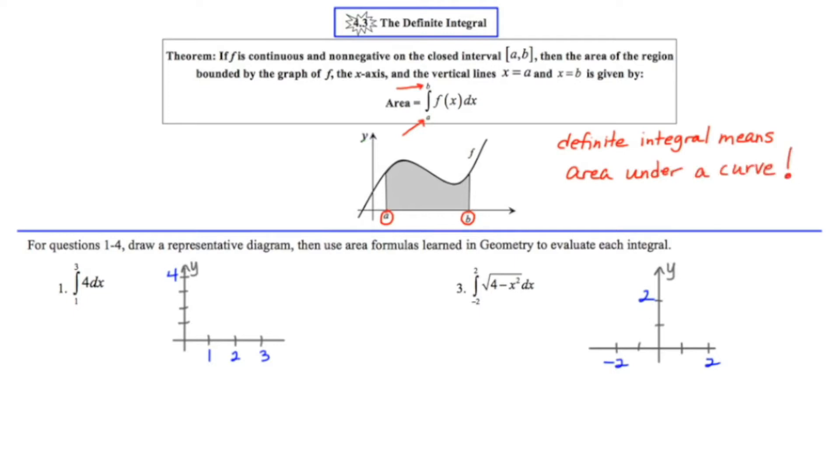Let's take a look at a specific question. For questions one through four, draw a representative diagram, then use the formulas learned in geometry to evaluate each integral. So in number one, the definite integral is from one to three of the function y equals four. So y equals four is just a horizontal line passing through the y-axis at four. This would be my function f right here.